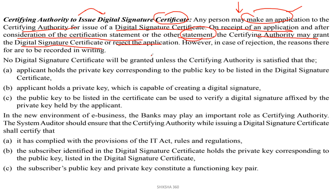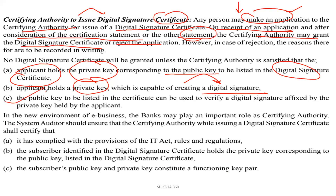No digital signature certificate will be granted unless the certifying authority is satisfied that the applicant holds a private key corresponding to the public key to be listed in the digital signature certificate. The private key is used to de-encrypt the data — we can say we lock the data and with the help of the public key unlock the data. The applicant holds a private key which is capable of creating a digital signature. The public key listed in the certificate can be used to verify a digital signature affixed by the private key held by the applicant.